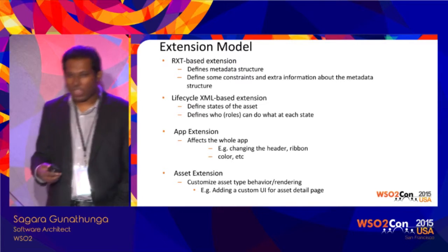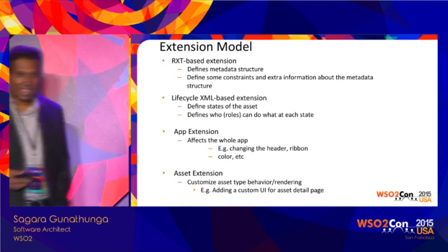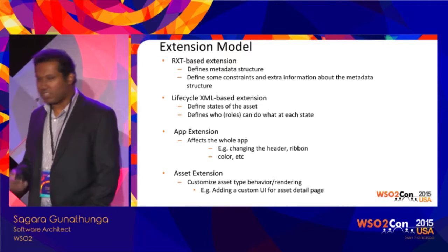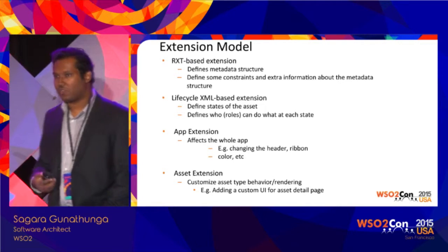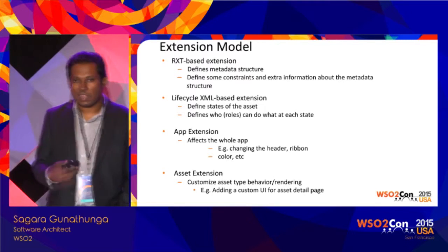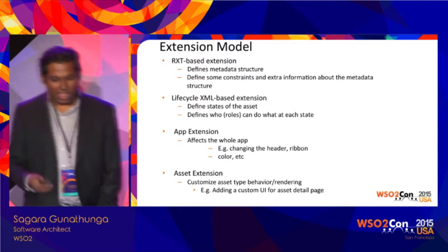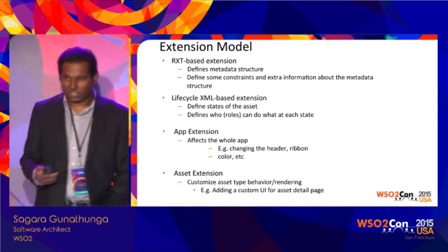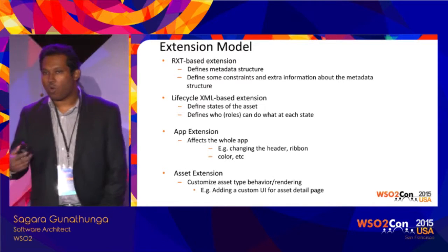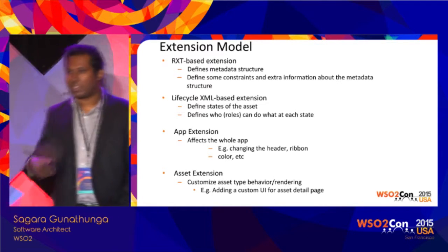The second extension type is lifecycle. For example, an e-book has a different lifecycle from a mobile application or mobile phone. You define the lifecycle again using governance registry, which provides a way to define lifecycles using SCXML. Both the RXT and SCXML-based lifecycle have been proven technologies for five or six years with WSO2 governance registry. In Enterprise Store, instead of reinventing something new, we decided to reuse these two. So we ended up supporting registry lifecycle in Enterprise Store. These two extensions are inherited from governance registry.